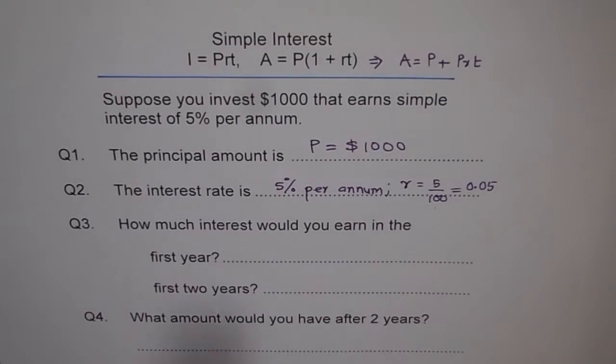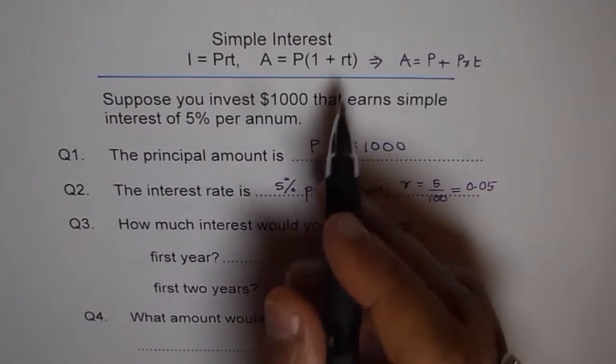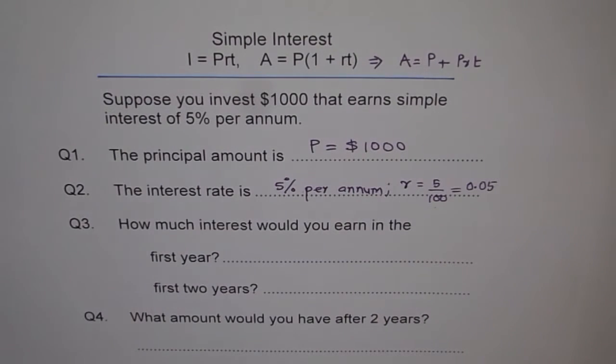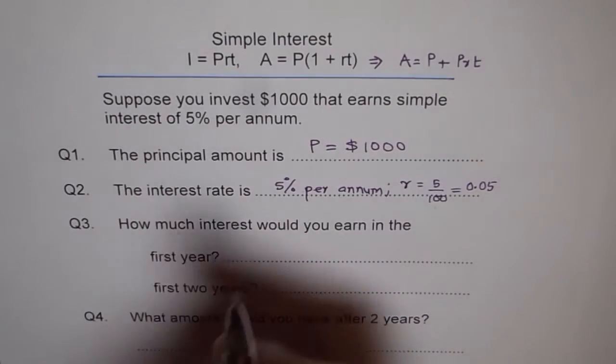Now, because I have seen this mistake being committed by students, they write 5 there and they get way off results. How much interest would you earn in first year? So first year interest earned. So we use the first formula.